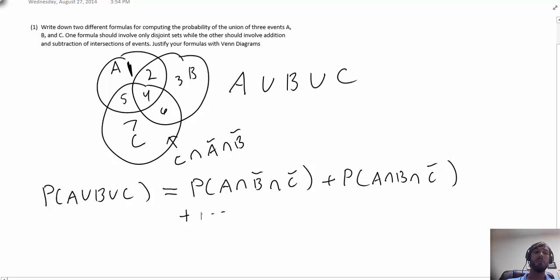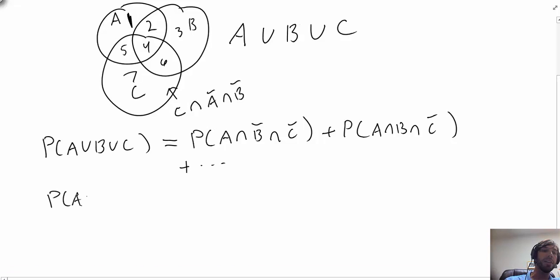Now the second way of writing a formula for the union, which is more like the addition rule we had for a union of two sets, is to think about not breaking this up in terms of disjoint sets, but to first add up the area of the individual circles or the probability of the events A, B, and C, and then figure out what you would need to subtract.